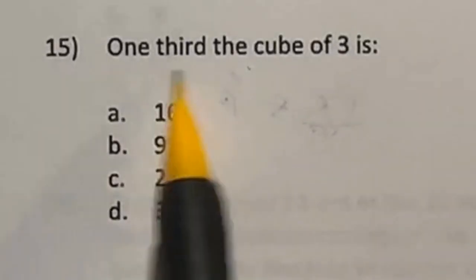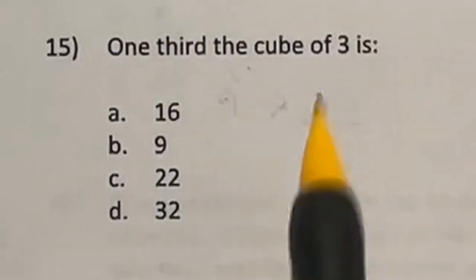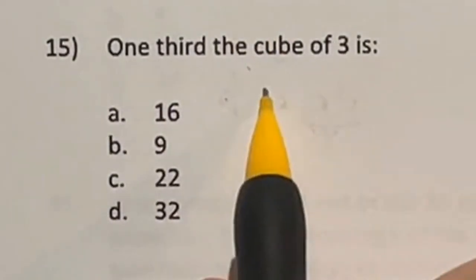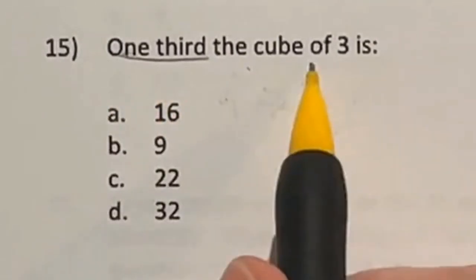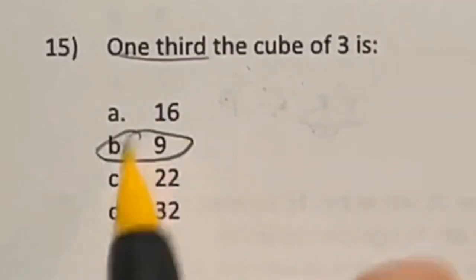Two ways to do this question. It says 1 third of the cube of 3 is what? Well, first off, let's cube 3. 3 times 3 is 9. Times another 3 is 27. So what's 1 third of that? Well, what's 27 divided by 3? B, answer 9.